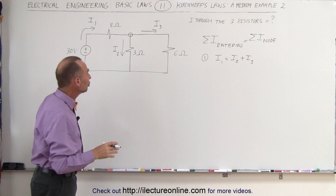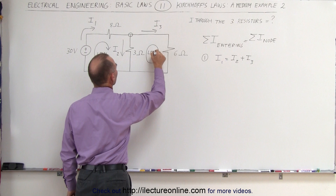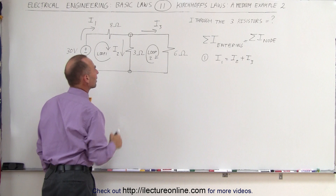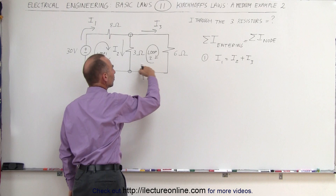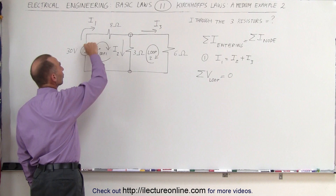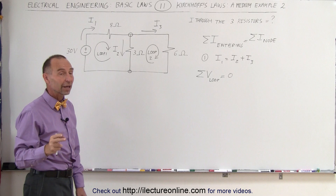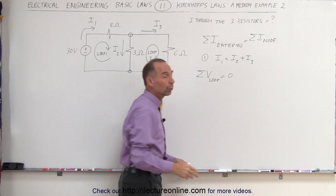Now we have two loops. Let's say we go around the first loop in this direction — call that loop 1. And the second loop, we go around in this direction — call that loop 2. We'll start at this node for both loops. The second law of Kirchhoff says that the sum of all the voltages around any loop must add up to 0. When we add up all the voltage rises and drops around loop 1 and loop 2, they should each add up to 0. That gives us the other two equations we need, since we're solving for three currents and therefore need three equations.